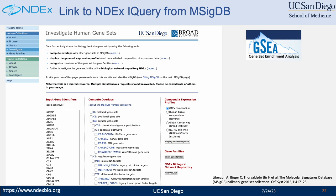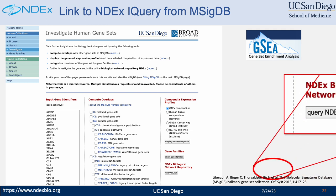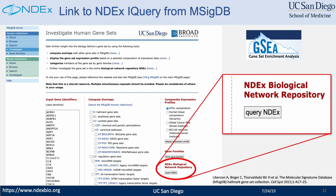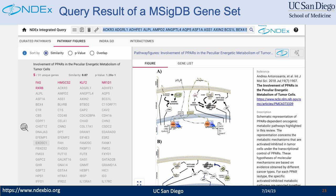Here is another example of integrating NDEX with your web application. We collaborated with MSigDB and implemented a two-way integration between MSigDB and NDEX. On the MSigDB search page, you can see at the lower right corner there is a 'Query NDEX' button. When a user clicks on it, the user will be redirected to the iQuery application. The search box is automatically populated with the gene symbols from the MSigDB search page, and the search is also triggered automatically.